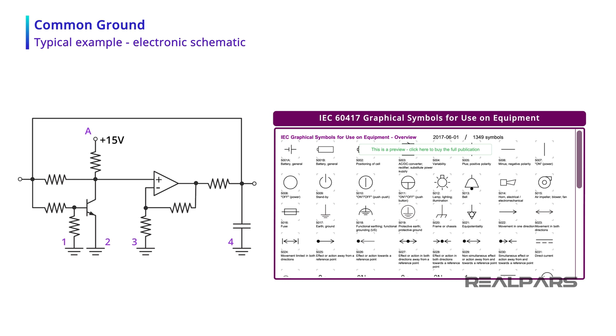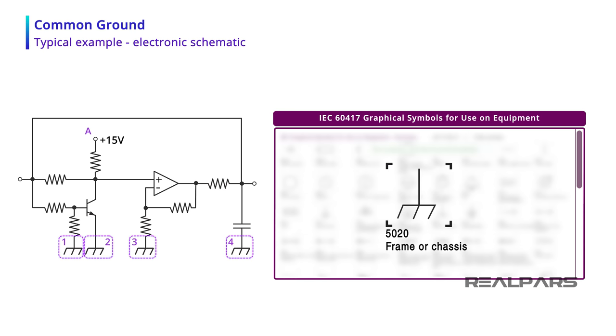If points 1 through 4 are not connected to earth ground but are connected to a common ground, it would be more appropriate to use the symbol IEC64175020. This symbol suggests the points are connected to a frame or chassis terminal.